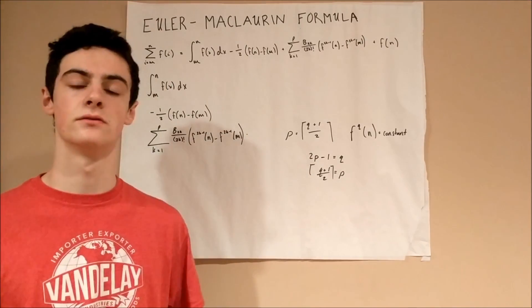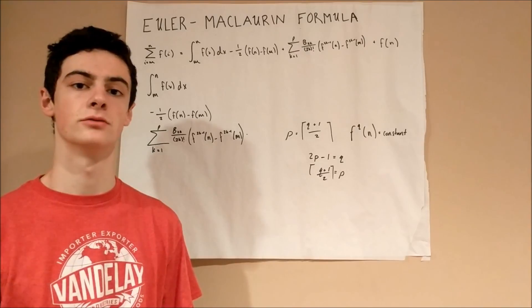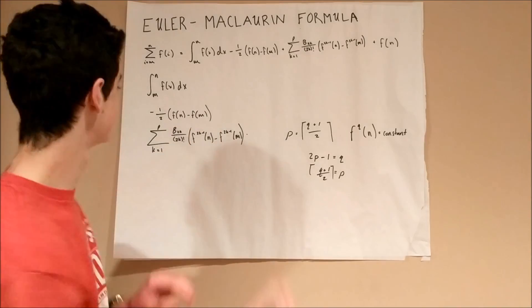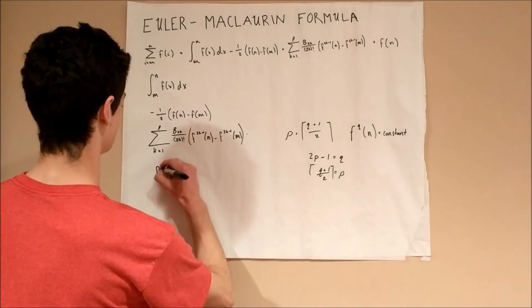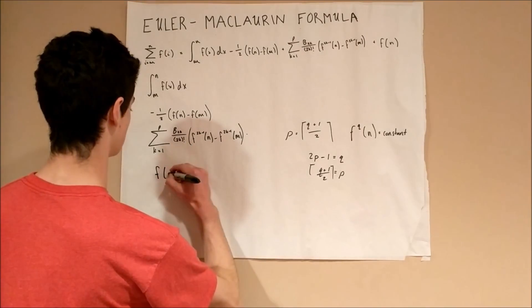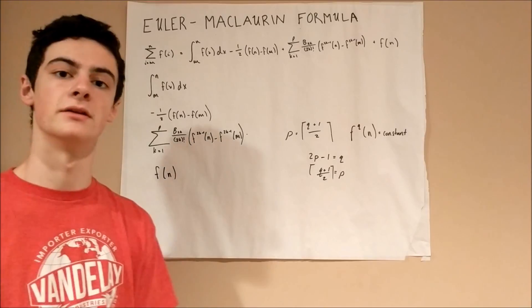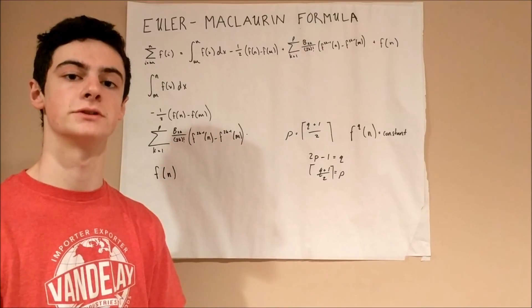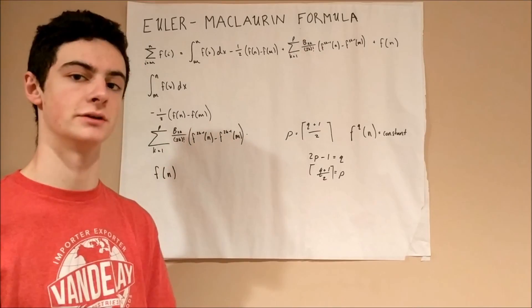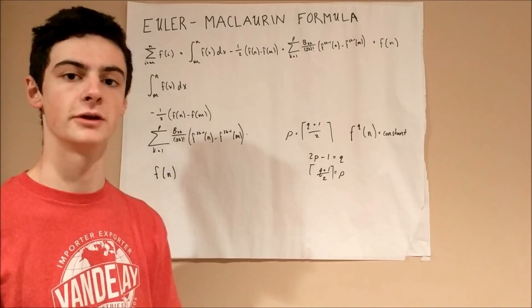Finally, you have the fourth component, which is simply f(n) — your original function with the upper limit n plugged in.